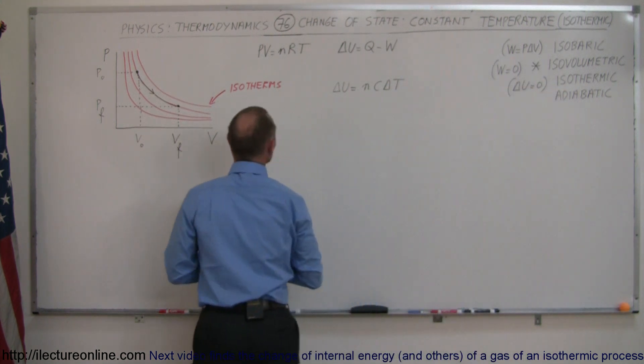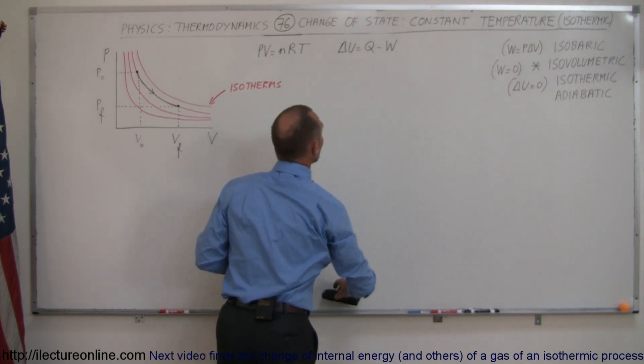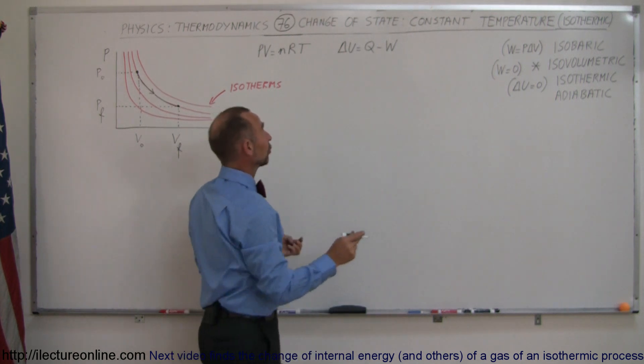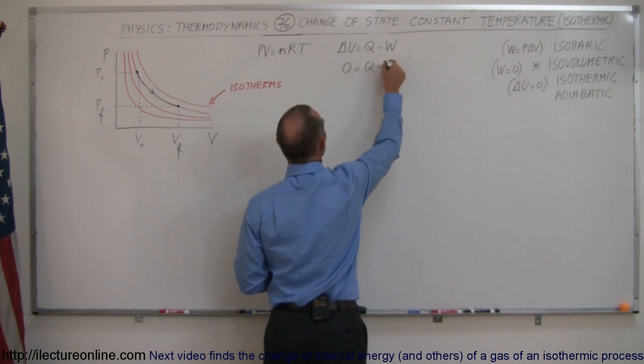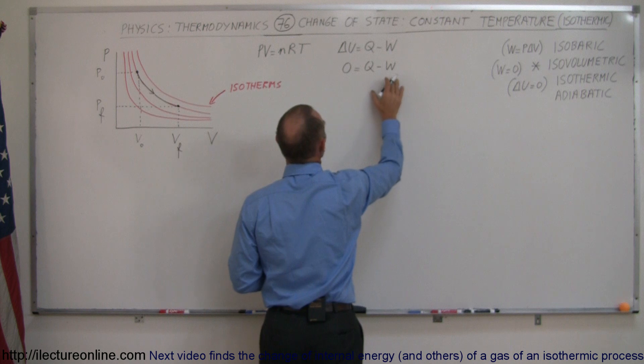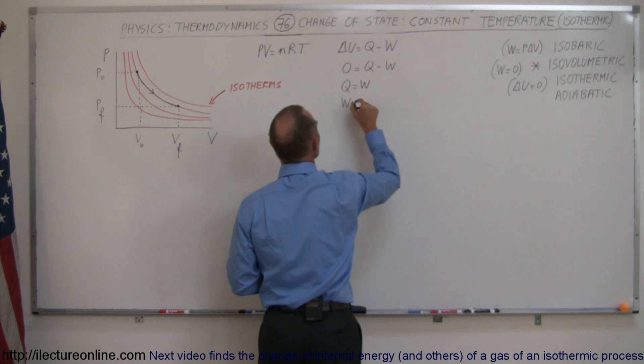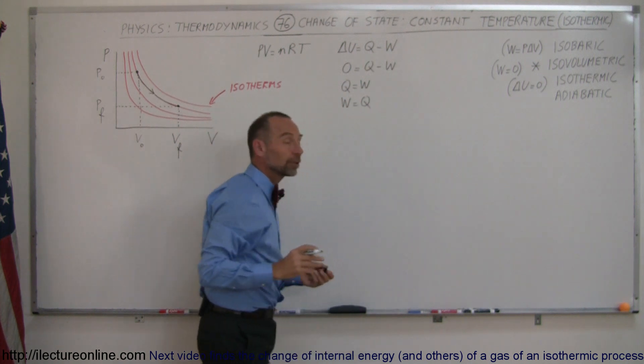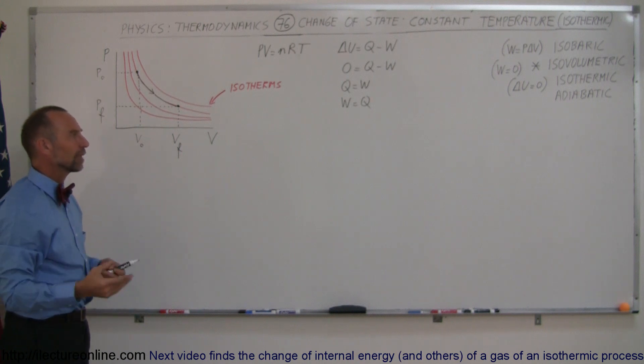All right, that means that the first law of thermodynamics in an isothermic process changes to the following: zero equals Q minus W, and of course when I move the W over, you can say that Q equals W, or W equals Q. The amount of work done by such a gas is equal to the heat added to the gas, which is kind of interesting.